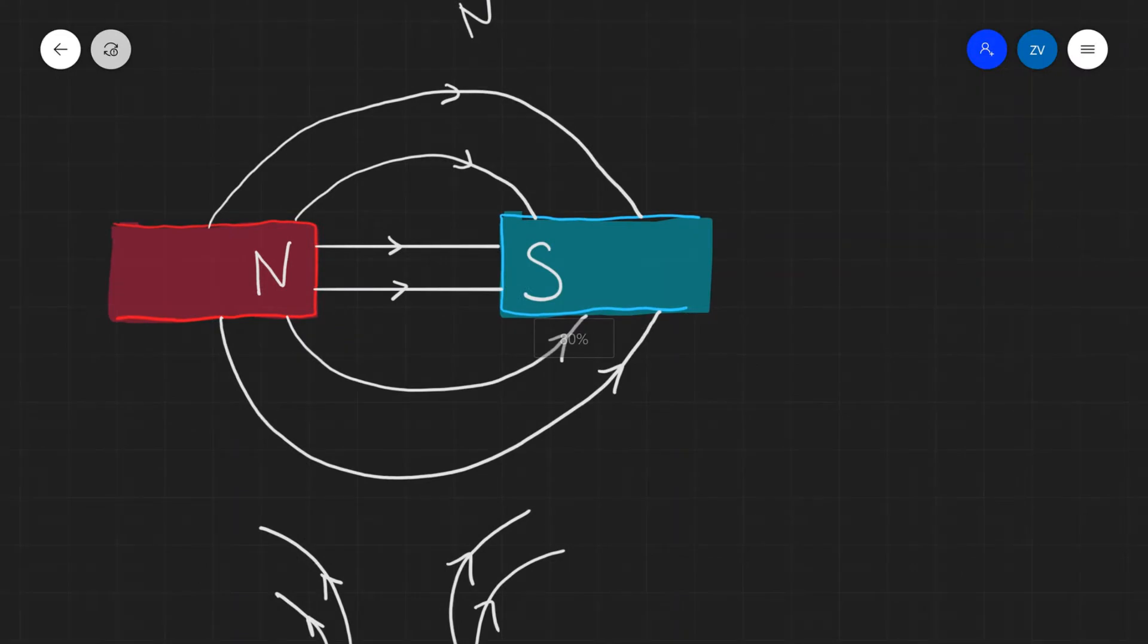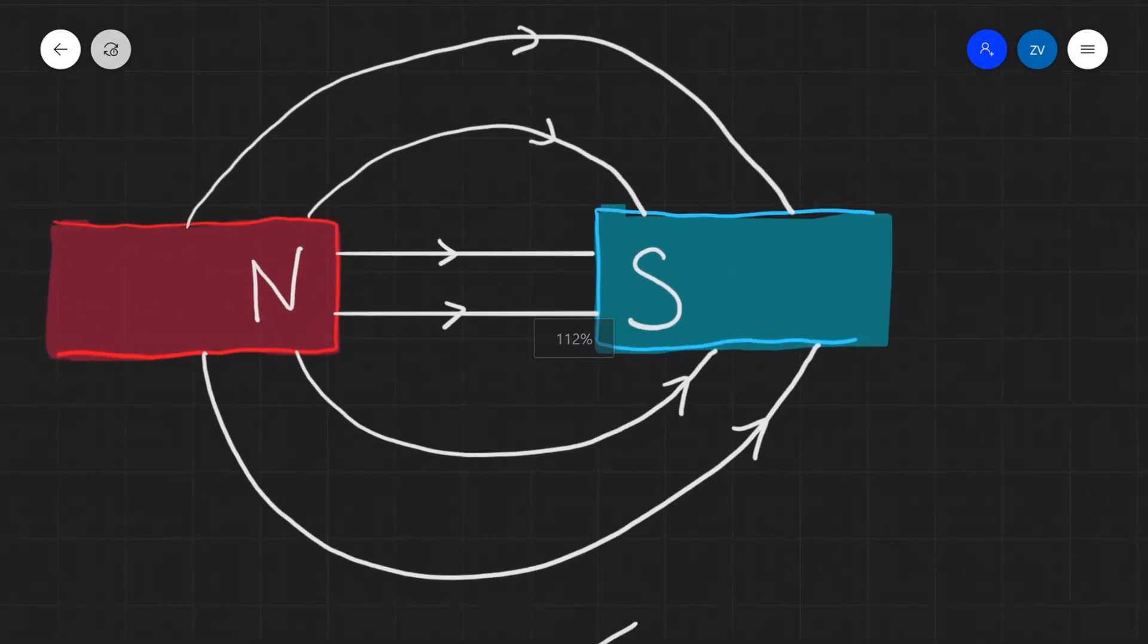What we will see is that a magnetic field between a north pole and a south pole will appear like this. Notice that in the region directly between the poles, the field is uniform.